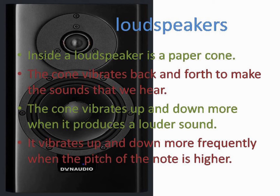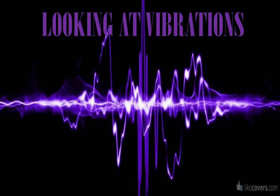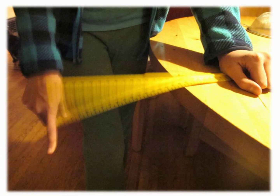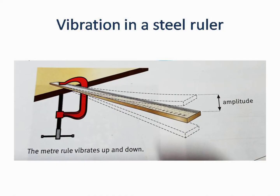Let us now go to our next topic: looking at vibrations. One way to observe a slow vibration is to take a meter rule, clamp it to a bench, and tape a weight to the free end. When you pull the end downwards and let it go, the weight vibrates up and down. Let us now watch a clip of vibration in a steel ruler.